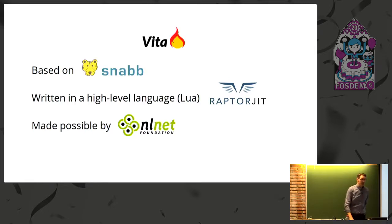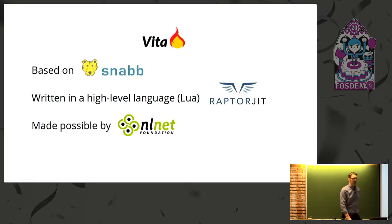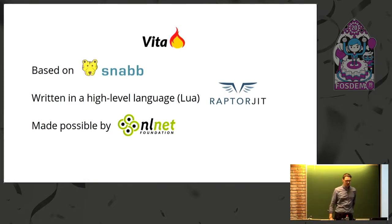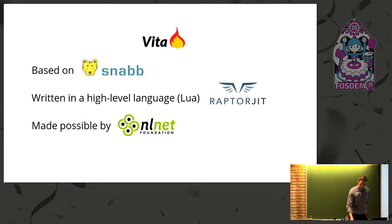Snap applications, including Vita, are written in a high-level programming language called Lua. This is possible thanks to a super-fast implementation of Lua called LuaJIT, which we have a fork of called RaptorJIT — basically a fork of LuaJIT that targets heavy-duty server applications specifically. I'm going to have a talk about that tomorrow in the Minimalistic Languages staff room.